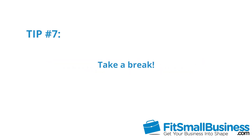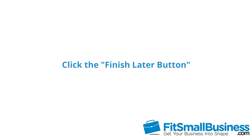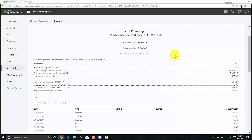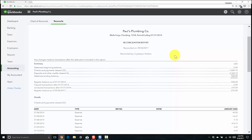Tip seven: take a break. If you've been at it for a while, select the Finish Later option to save the work you've done so you can easily pick up where you left off. Sometimes taking a breather and coming back can help you spot what's causing the difference quickly. Tip eight: while it might be tempting, I recommend that you don't click the Reconcile button until you have a difference of zero. The problem will not go away — the difference will just carry over to the next month. If you do hit reconcile without resolving the difference, QuickBooks will record the out-of-balance in a miscellaneous expense account called Unreconciled Discrepancies. If we're talking about a small amount — $5 or less — it might be worth your while to move on. At the end of the day, you get to determine what amount you're comfortable with.